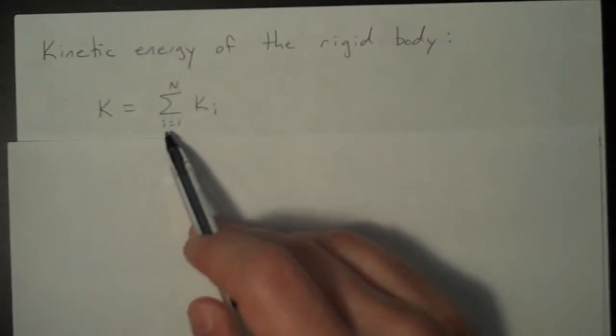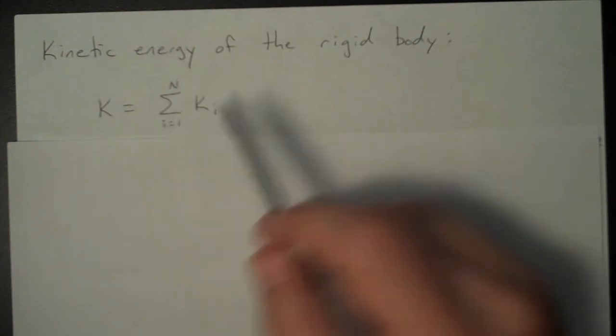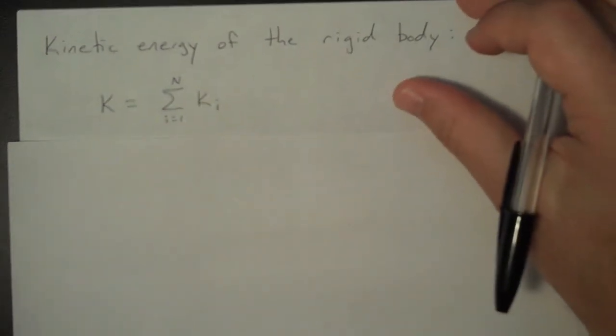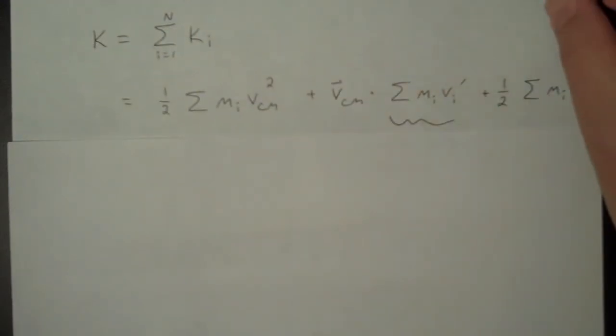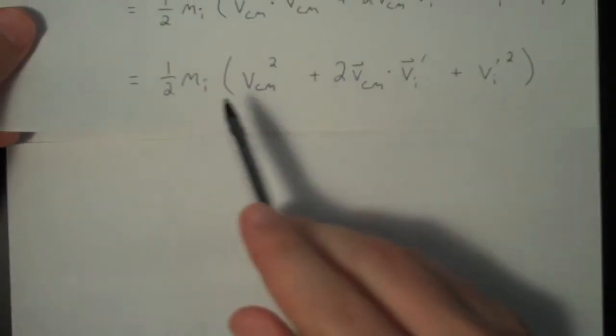I need to add up all of the kinetic energy contributions from all the points on the rigid body. So that's what I'm doing here. i goes from 1 to N, where N is the total number of points under consideration in this body.